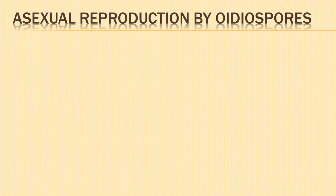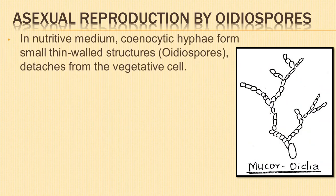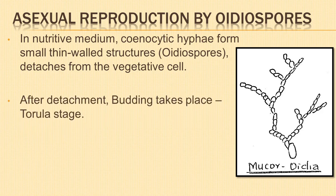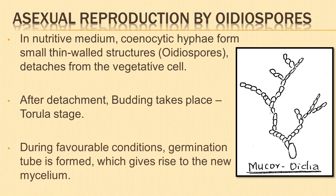Next is asexual reproduction by oediospores. When kept in a nutritive medium, the coenocytic hyphae form small, thin-walled structures that detach from the vegetative cell. The spore so formed is the oediospore. After detachment, it increases by budding — this stage is called the torula stage. It remains dormant for some time, and on return of favourable conditions, it forms a germination tube which gives rise to new mycelium.